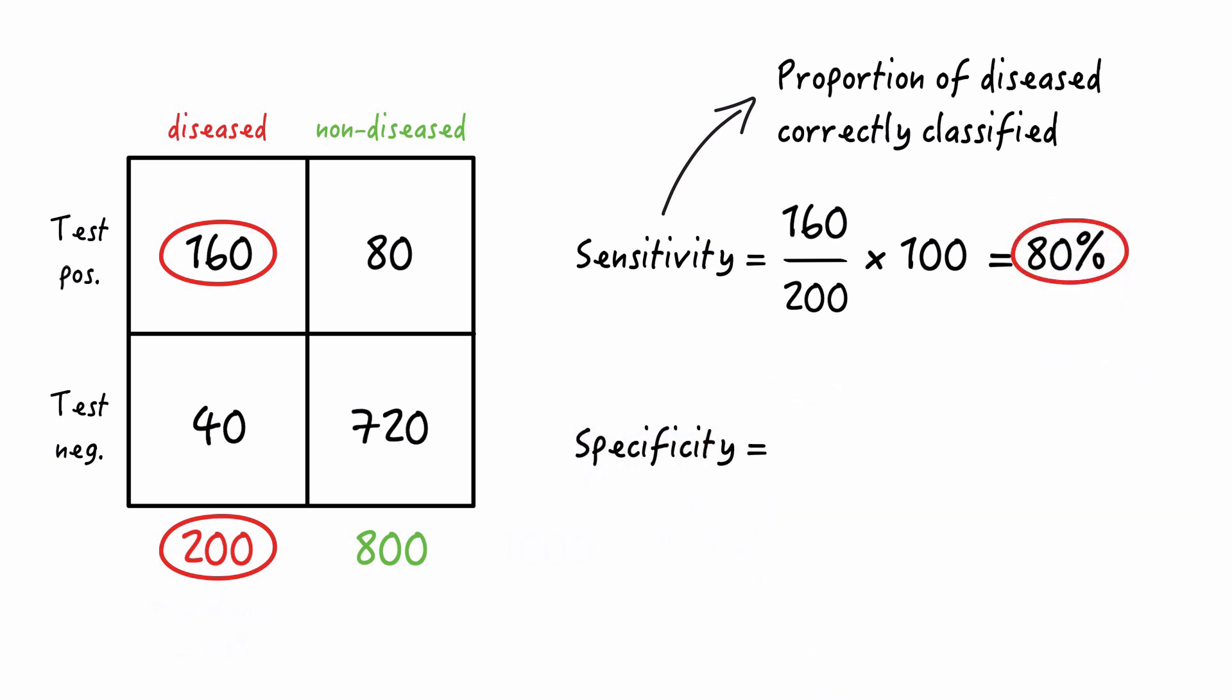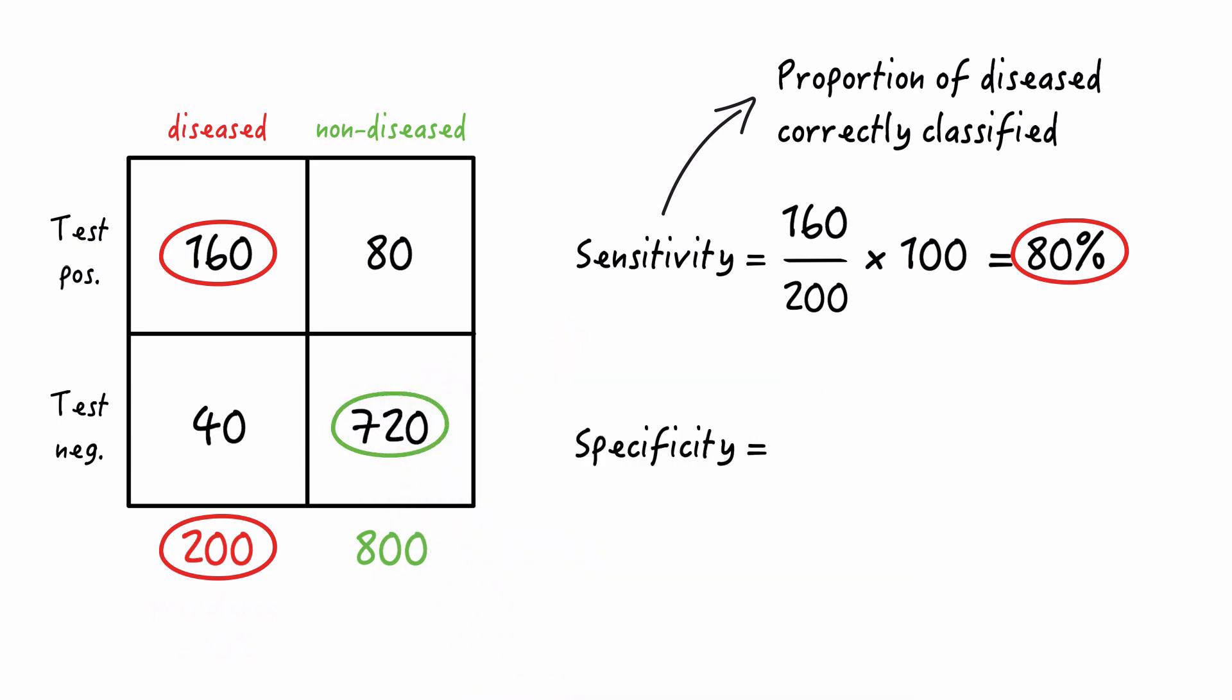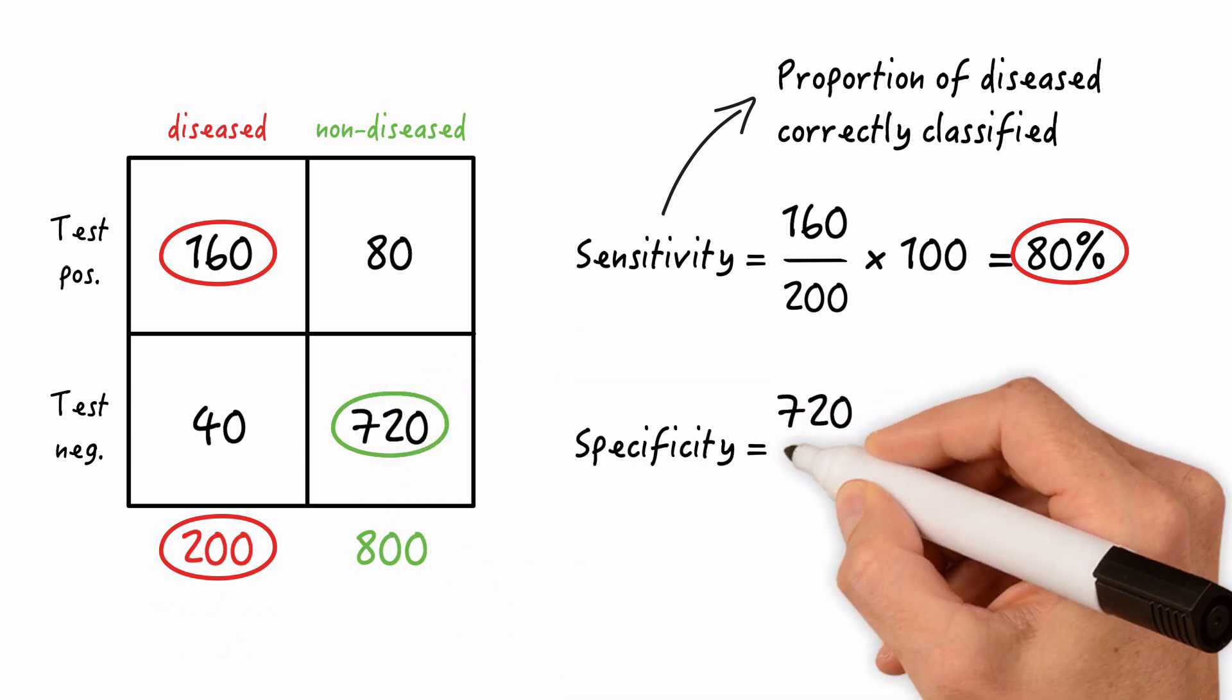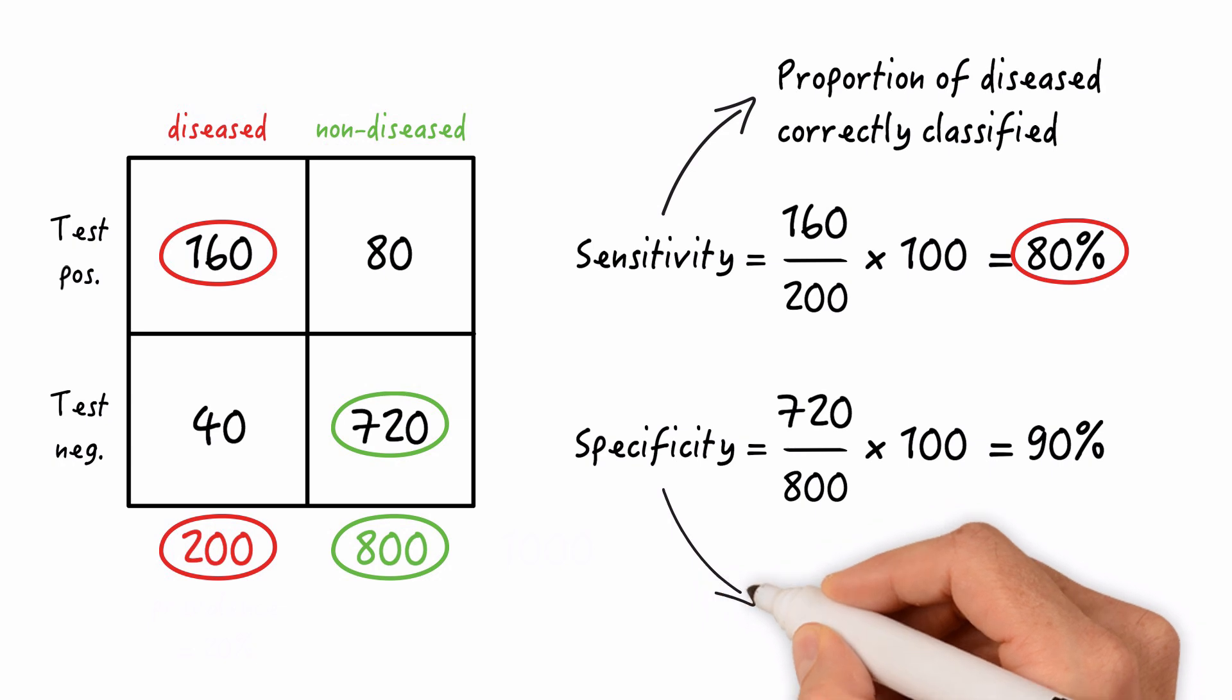The specificity is calculated as the number of non-diseased individuals correctly classified, so 720 divided by all non-diseased individuals of 800 times 100, and that equals 90%. So the specificity is the proportion of non-diseased correctly classified.